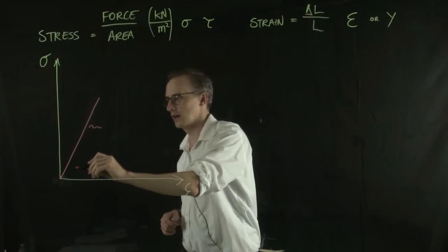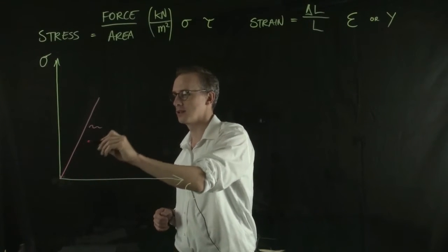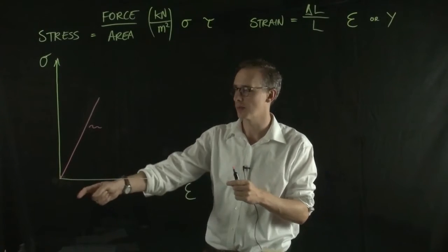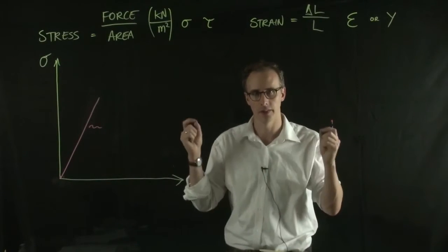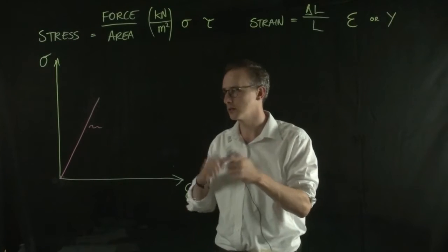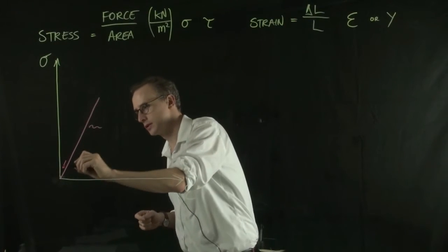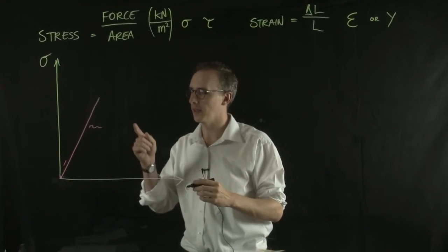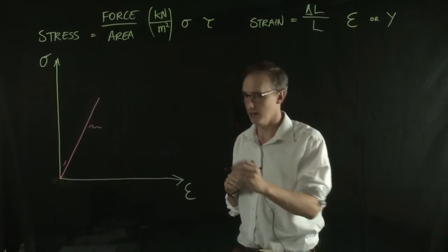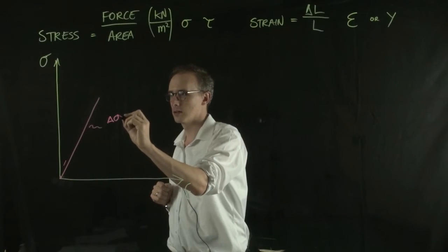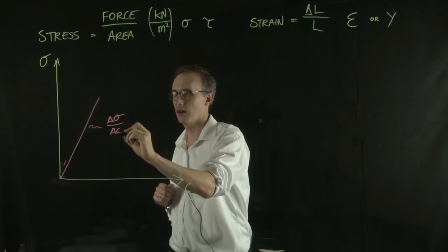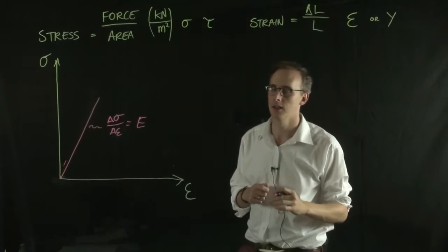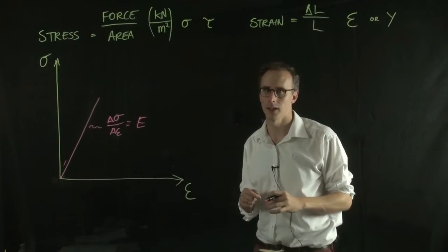For instance, if I loaded a spring up, increasing its length by putting stress into it, then let it go, it should return to its original point. This is elastic deformation. The gradient of that line - the change in stress over the change in strain - equals Young's modulus of elasticity, which we give the symbol E.